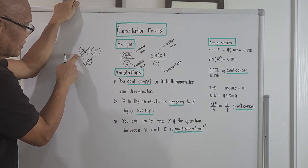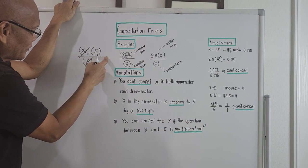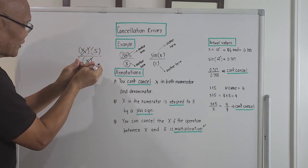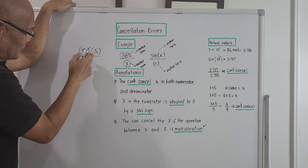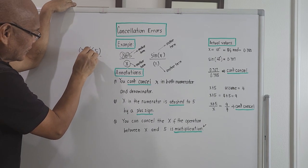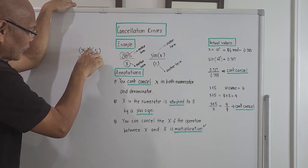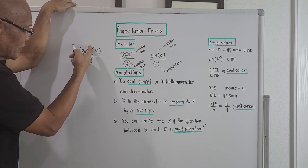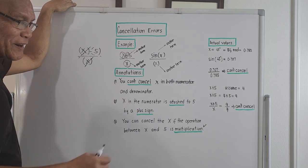This x here has a relation with 5, and if that relation is a multiplication operation, you can cancel. But if the relation of x with respect to 5 is a plus or maybe a minus, you cannot cancel x and x. That's very clear.